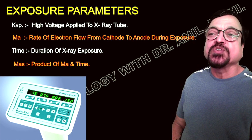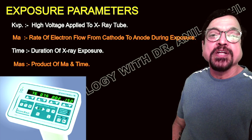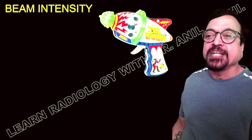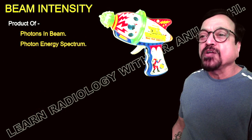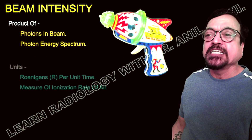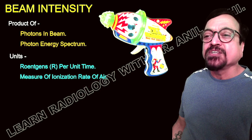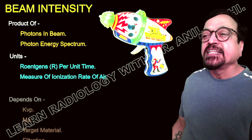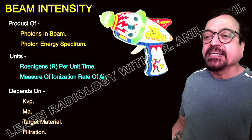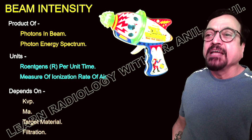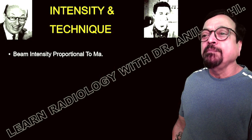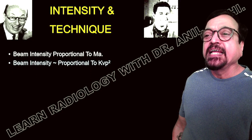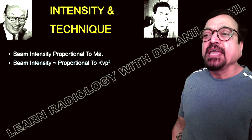mAs is the product of mA multiplied by seconds, which is almost constant for any radiographic part. We have the liberty to increase mA when we want to reduce exposure time. Short exposure timing produces a movement-free or artifact-free image. Beam intensity is a product of the number of photons in the beam and the photon energy spectrum, measured in roentgens per unit time.